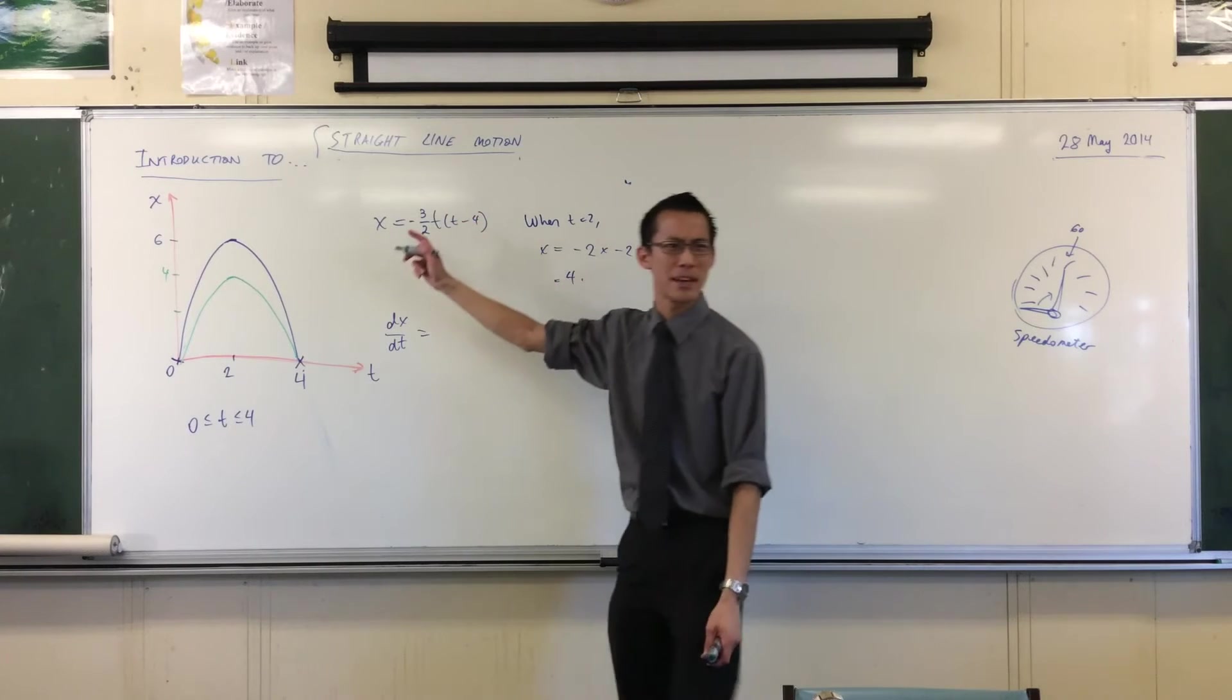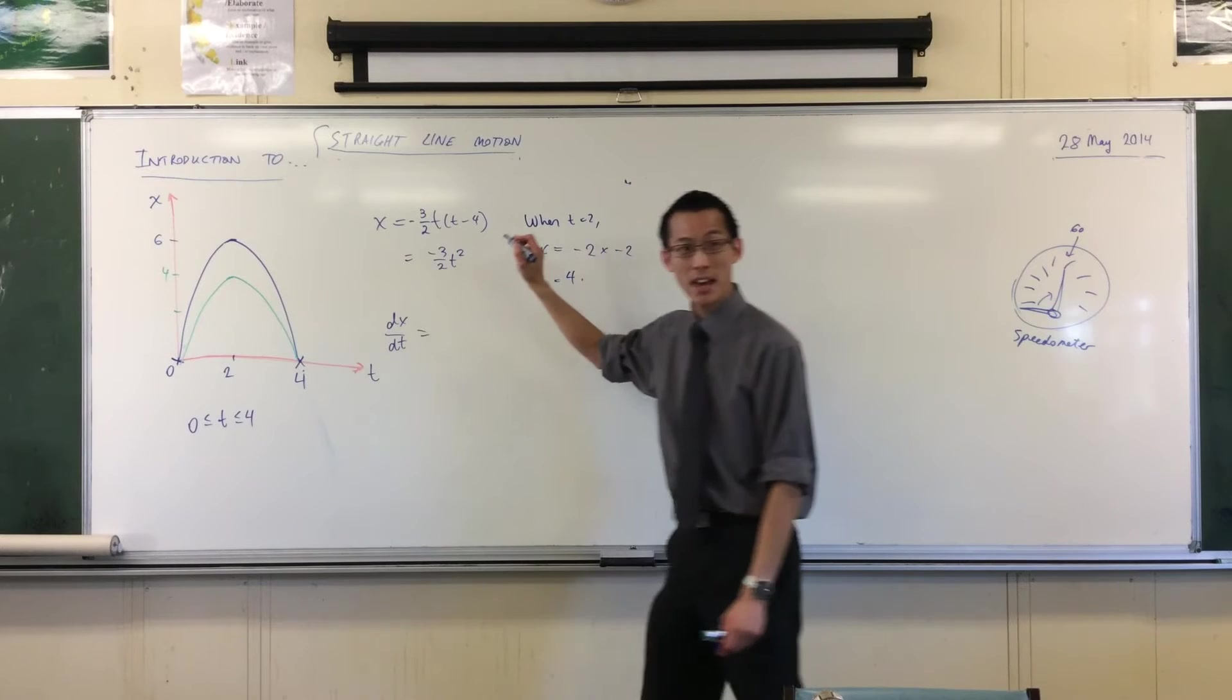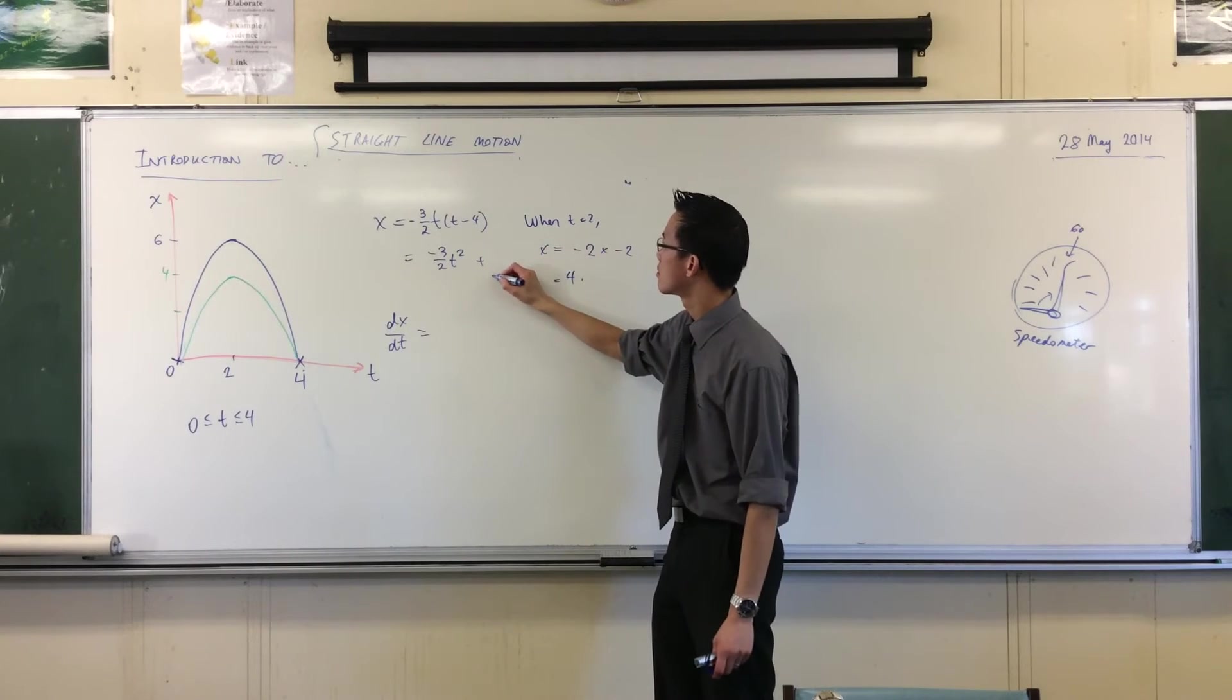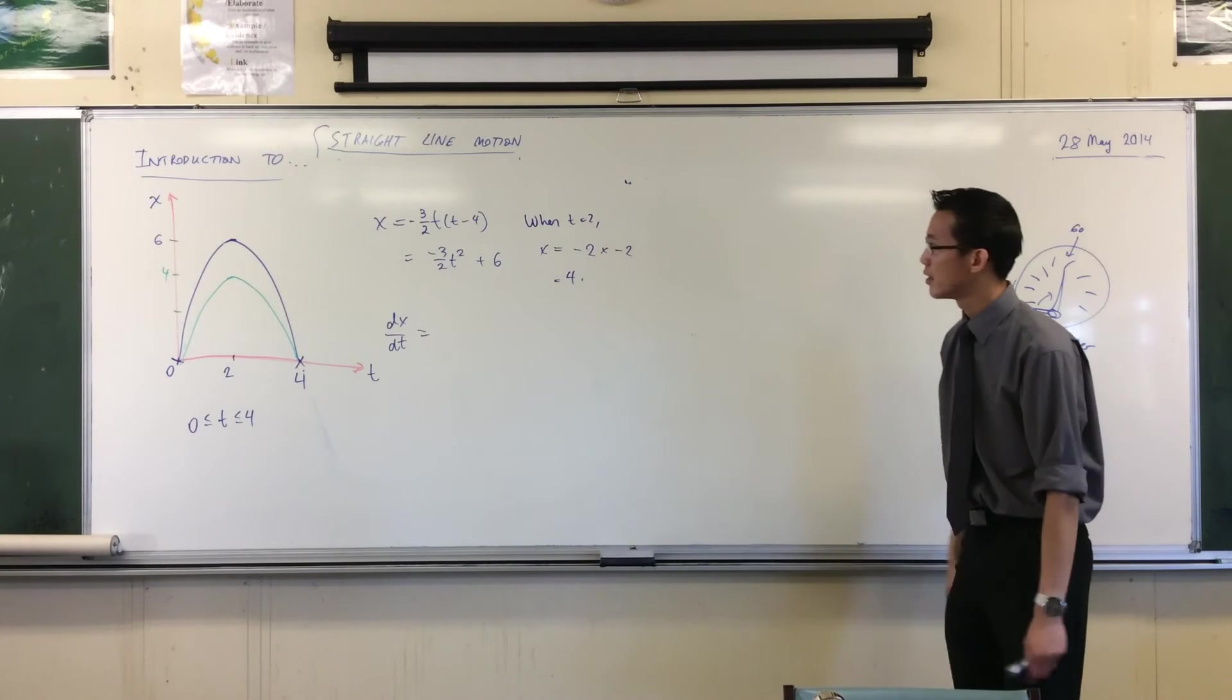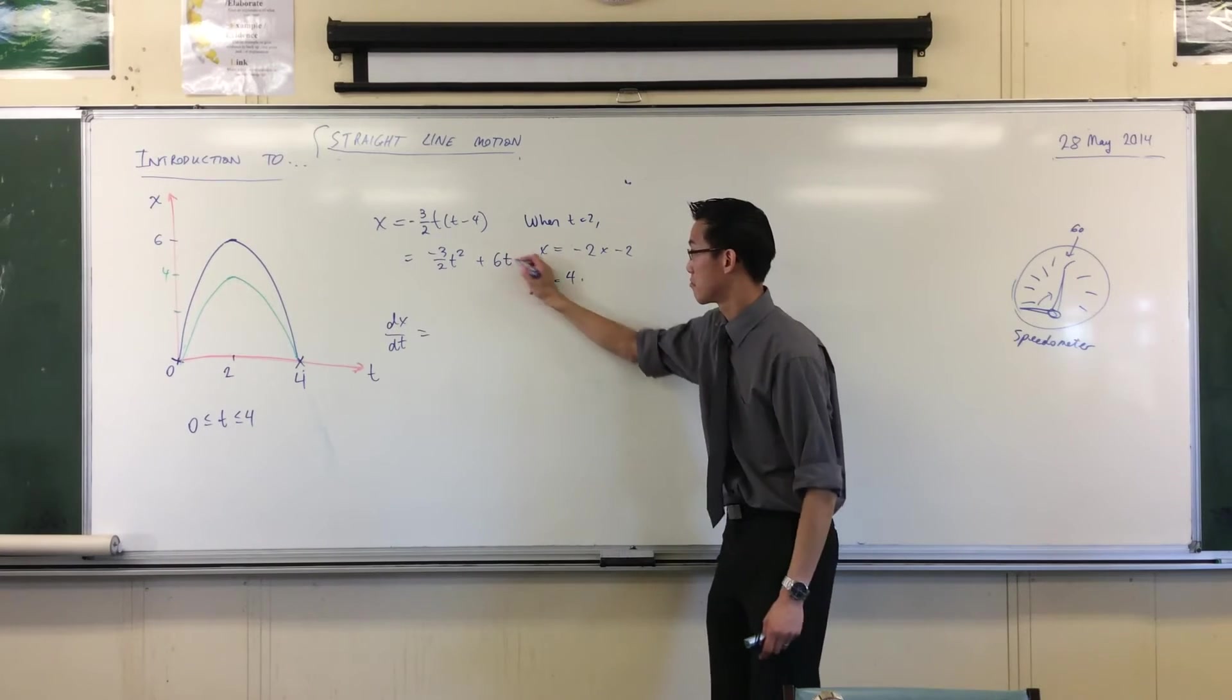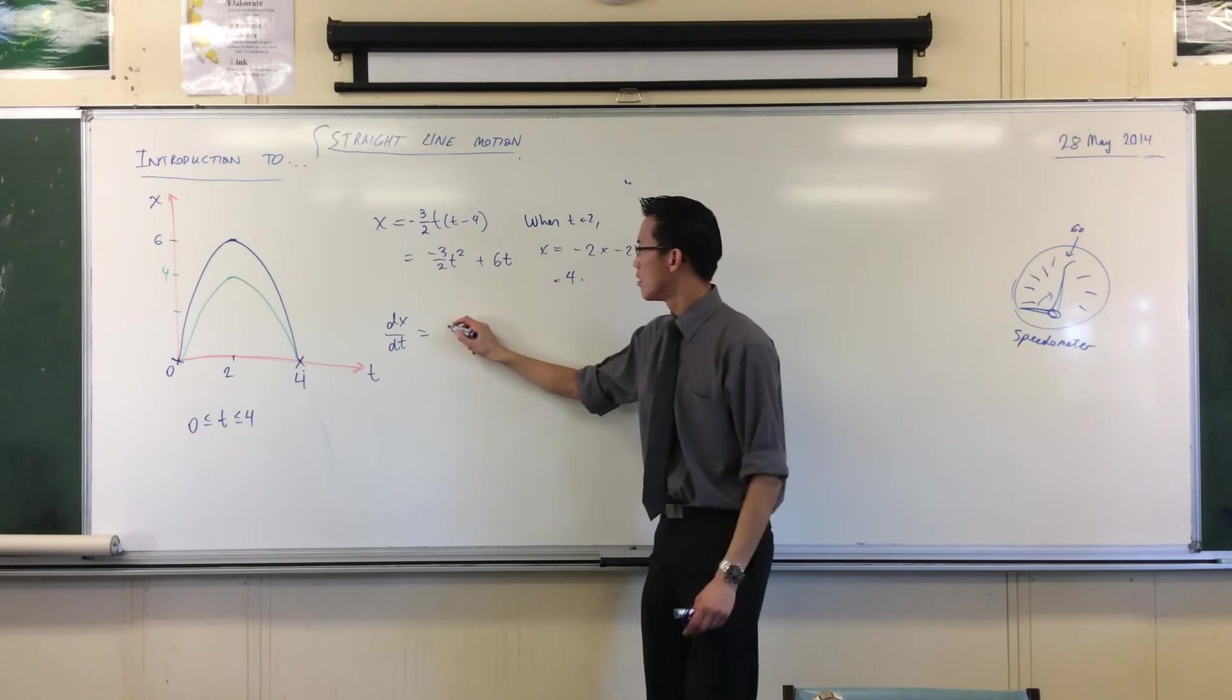What is the x under t? Shall I expand this? Maybe that'll make it a little easier. This is negative three over two t squared plus six t. Got the double negative. So what's the derivative? Negative three t plus six.